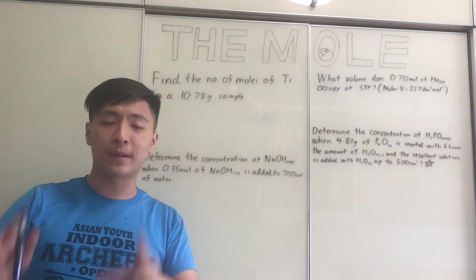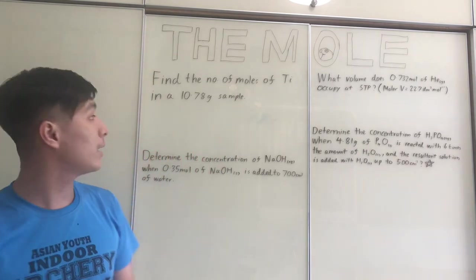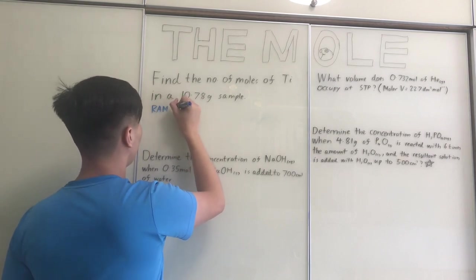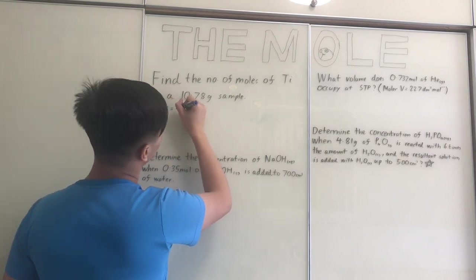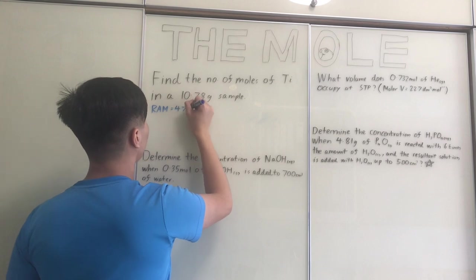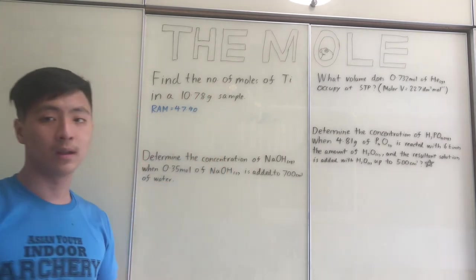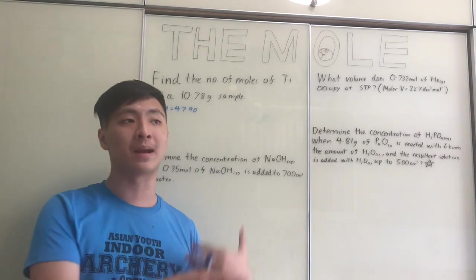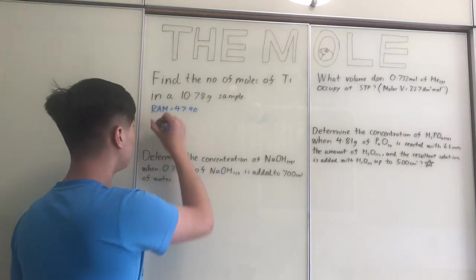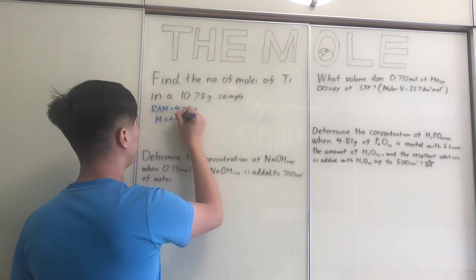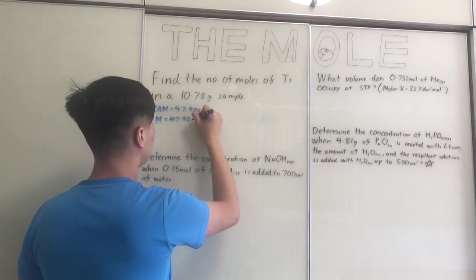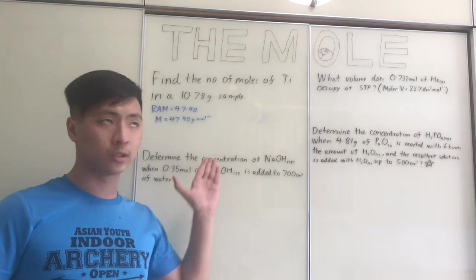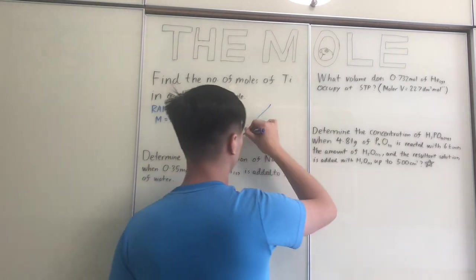Looking in the periodic table, the relative atomic mass of Ti is 47.90. Given that relative atomic mass in grams is equivalent to molar mass, the molar mass of titanium (large M) is 47.90 g mol⁻¹. Now we use the triangle relationship: number of moles N, mass of the substance (little m), and molar mass (big M).